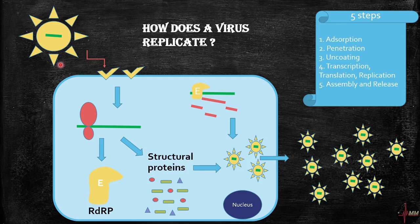One point to understand for medical students: the virus may have a positive sense or a negative sense RNA. In this example, the coronavirus has a positive sense RNA, which is equivalent to mRNA. When ribosomes attach to it, proteins are made directly.